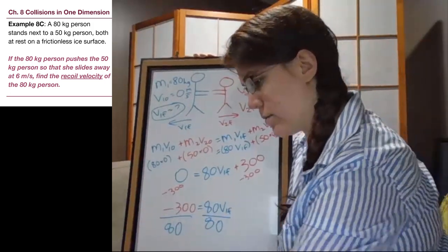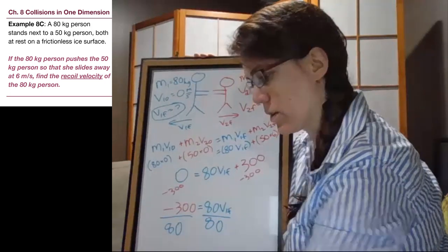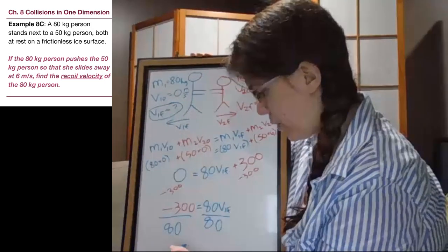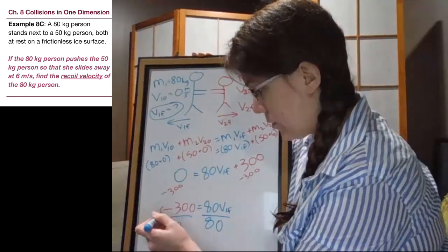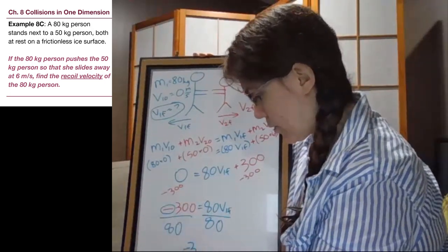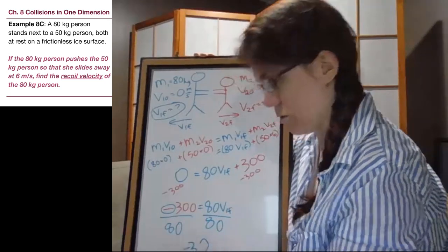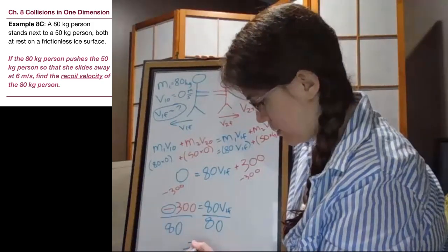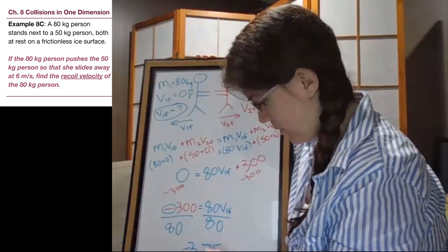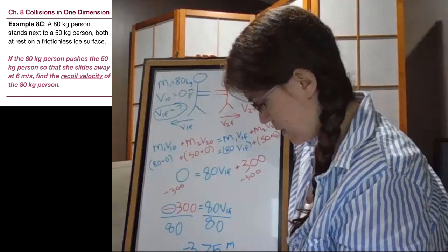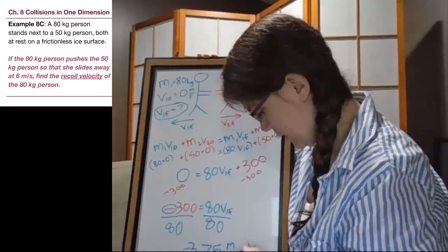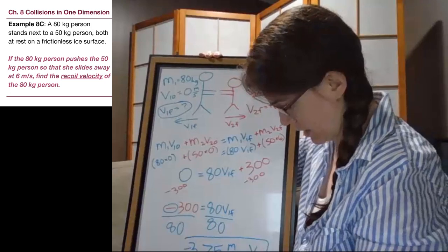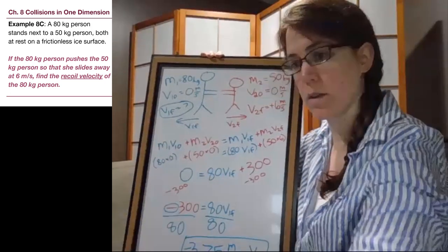All right. So we have on the left, we have negative 3.75 meters per second is V1 final. So let's put a box around that.